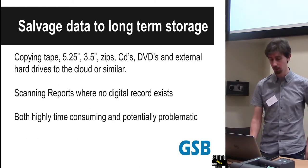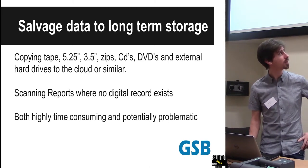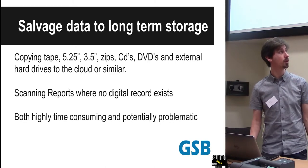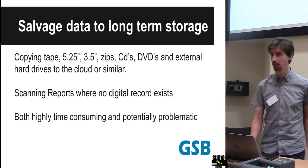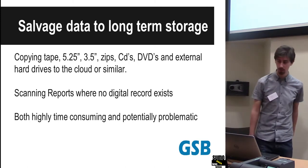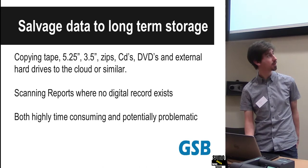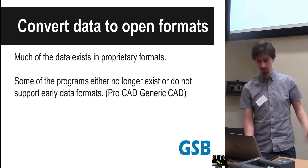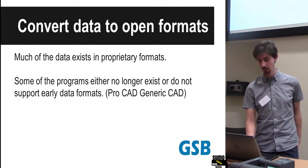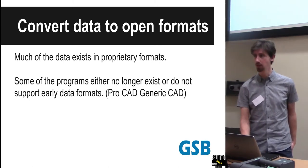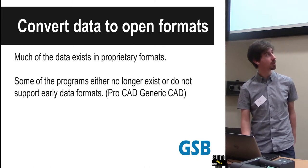Salvaging data — as you've seen from the earlier images, we've got tape, five-and-a-quarter inch, three-and-a-half inch, zips, CDs — pretty much everything. Many of our older records will have no digital data at all, so that's going to involve going through and simply scanning the entire report. These are going to be both highly time-consuming, and there will be problems at every stage. Converting data to open formats is also a challenge. Some of our early CAD programs — I've got ProCAD there, and we used EasyCAD as well — some of these programs we can't seem to get to work with modern AutoCAD and DraftSight. So it's finding a way to get these CAD images out without having to scan them and redraw them.